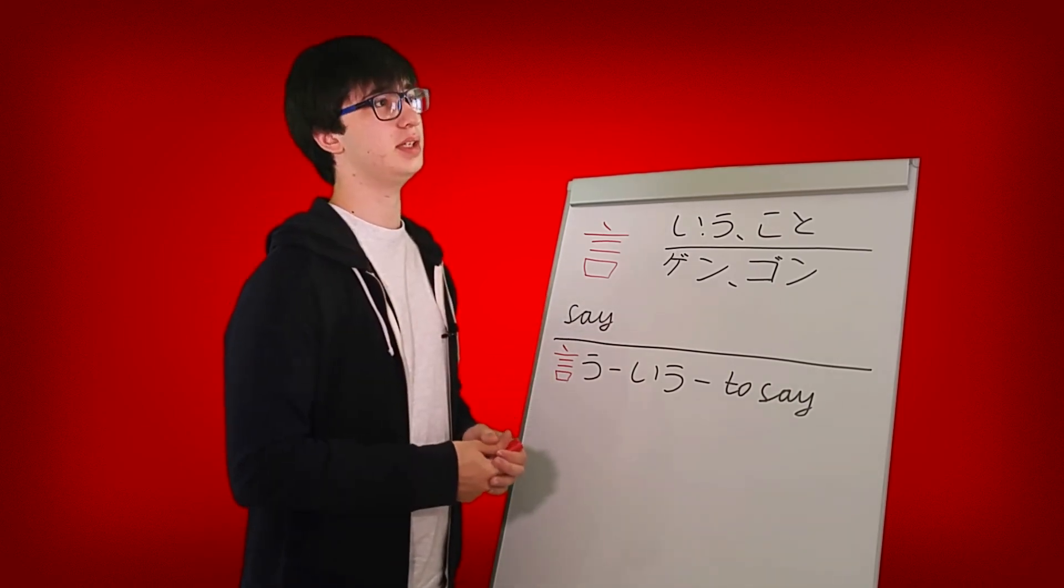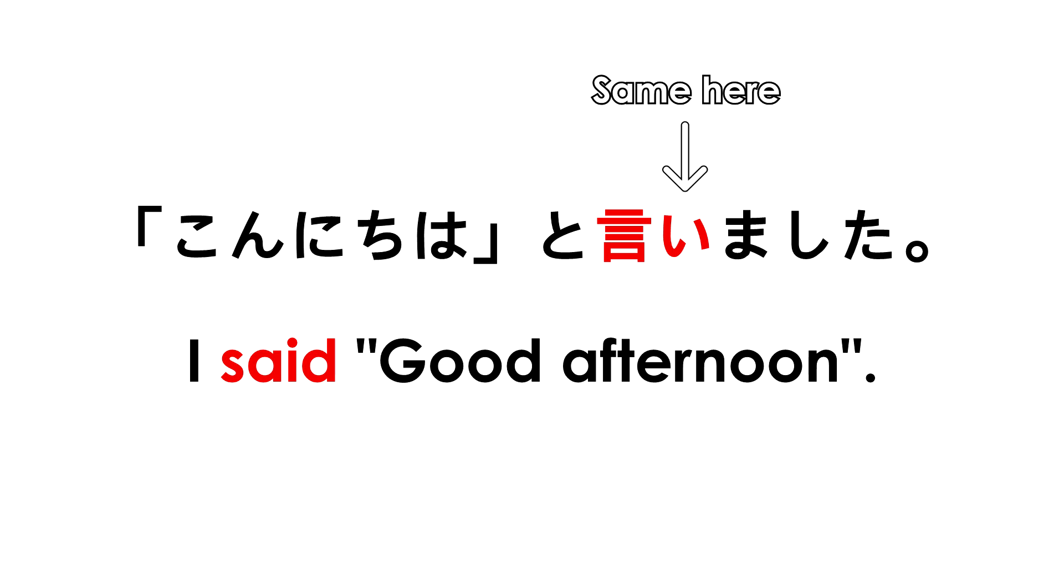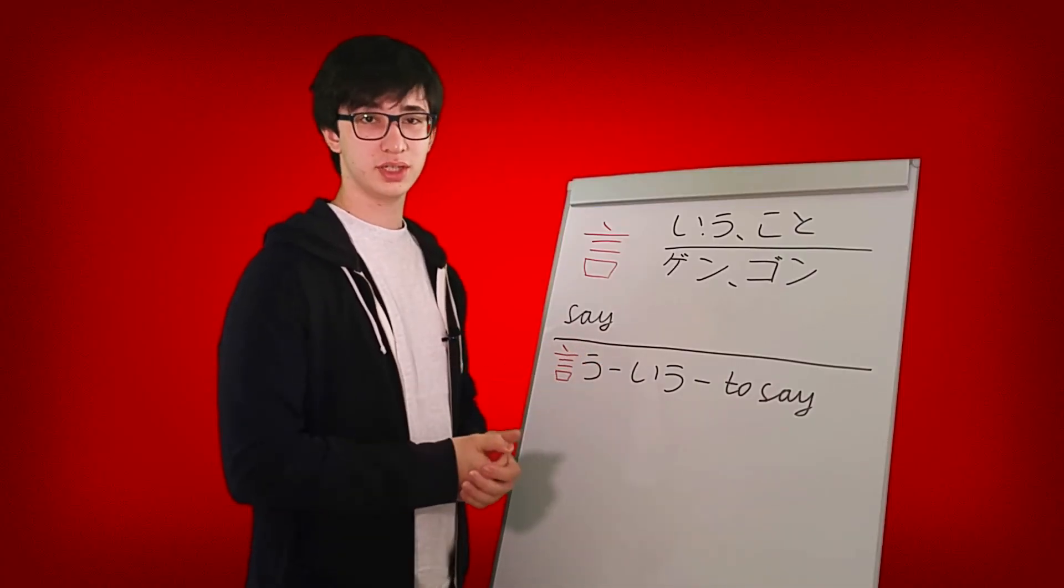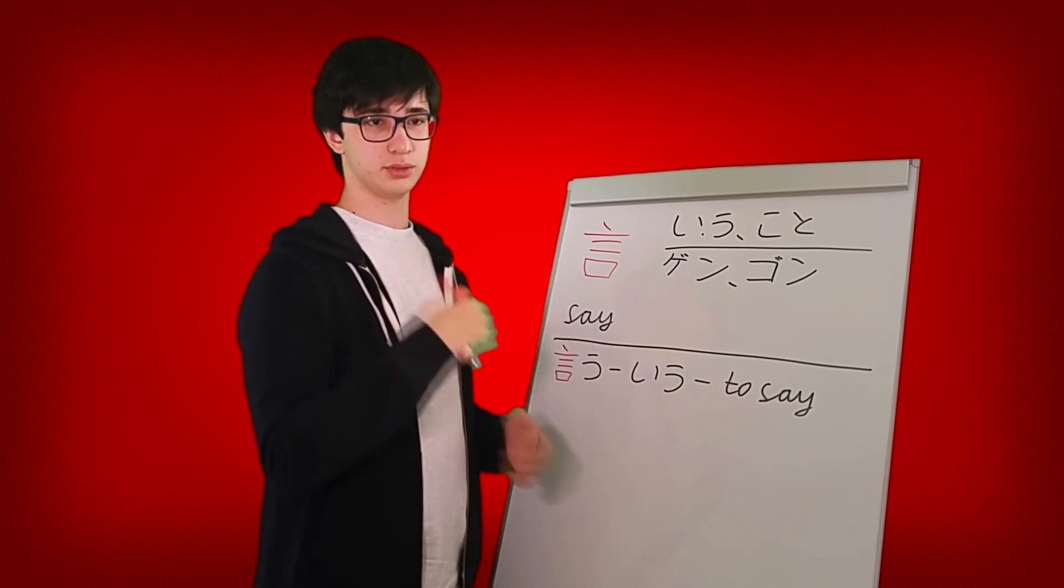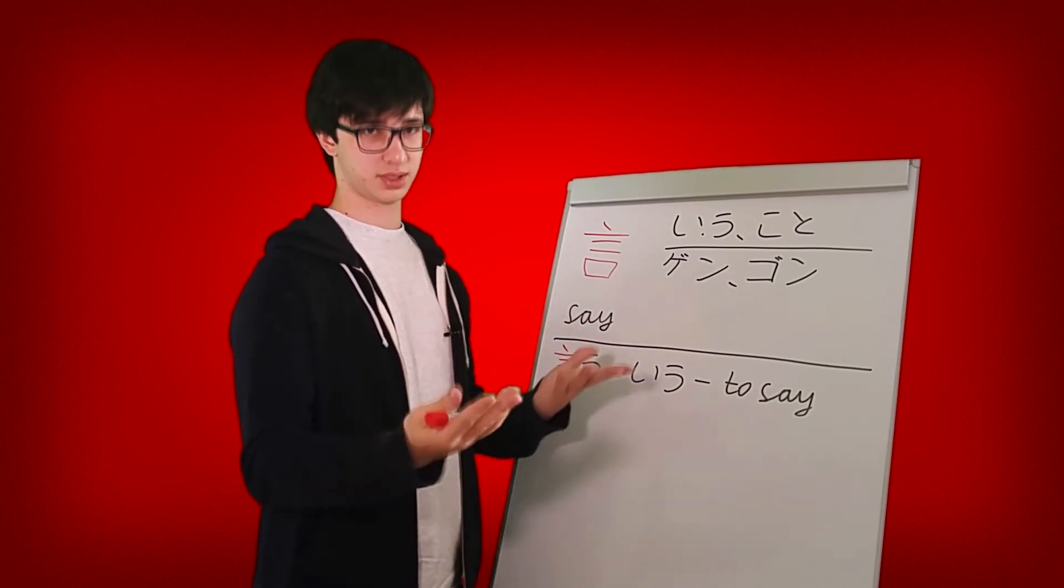So the next example can be konnichiwa to iimashita which means I said good afternoon. Maybe you're just telling someone a story and you can use something like this. Something something to iimashita. I said something.